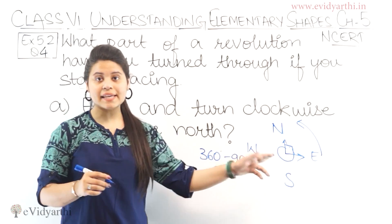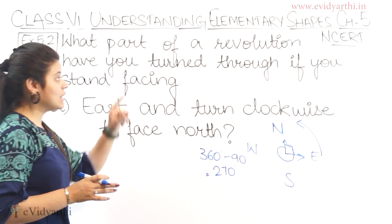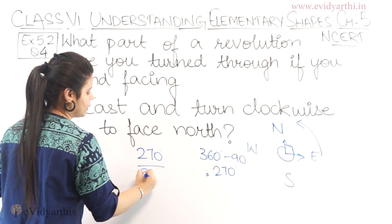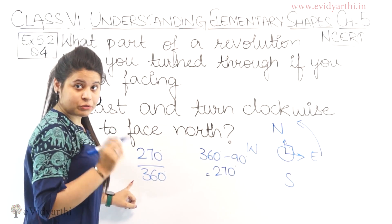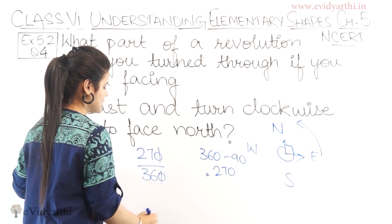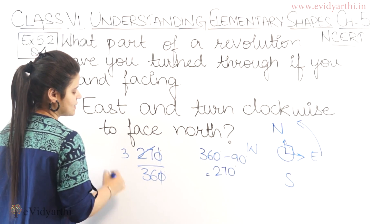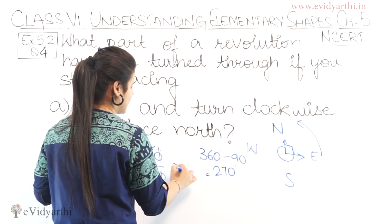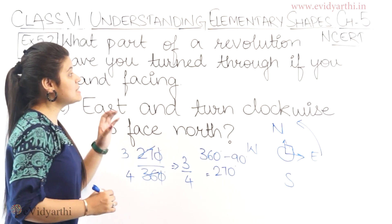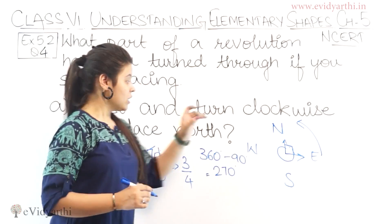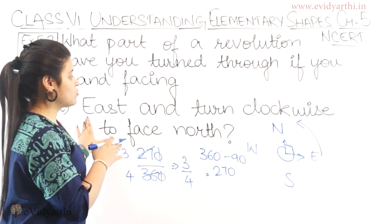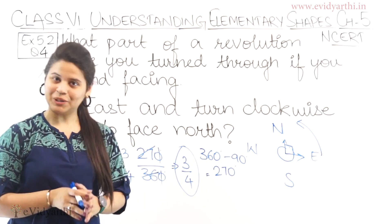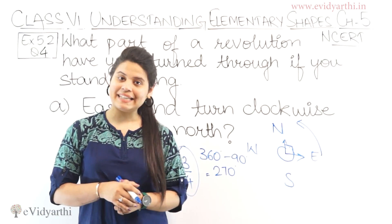That means the angle is 270 degrees. To find the fraction, 270 upon 360, because a complete revolution is 360 degrees. Cancelling zeros: 27 upon 36, which simplifies to 3 upon 4. So the fraction is 3/4 of a revolution — that is the answer for part (a), starting from east and turning clockwise to north.